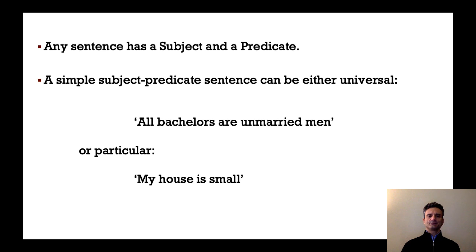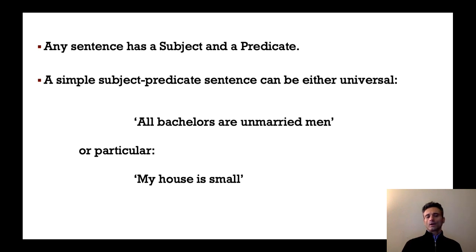Any sentence, as you all know, has a subject and a predicate. A simple subject-predicate sentence can be either universal or particular. For example, I can say 'all bachelors are unmarried men' — that's universal. Or a particular: 'my house is small.'